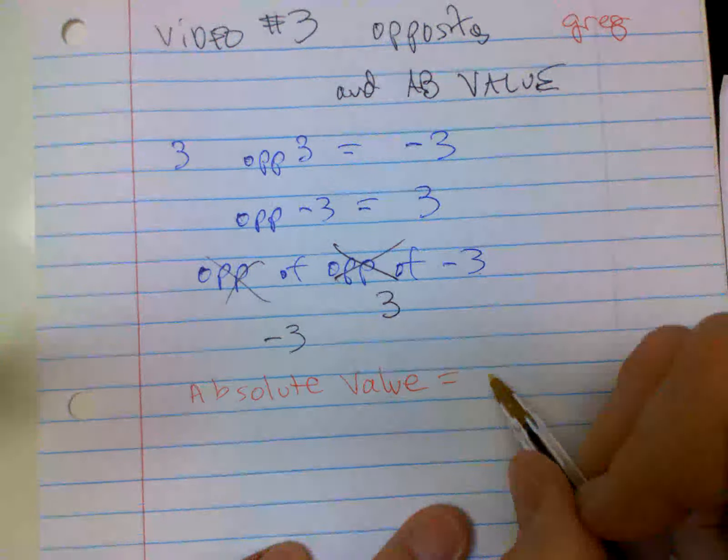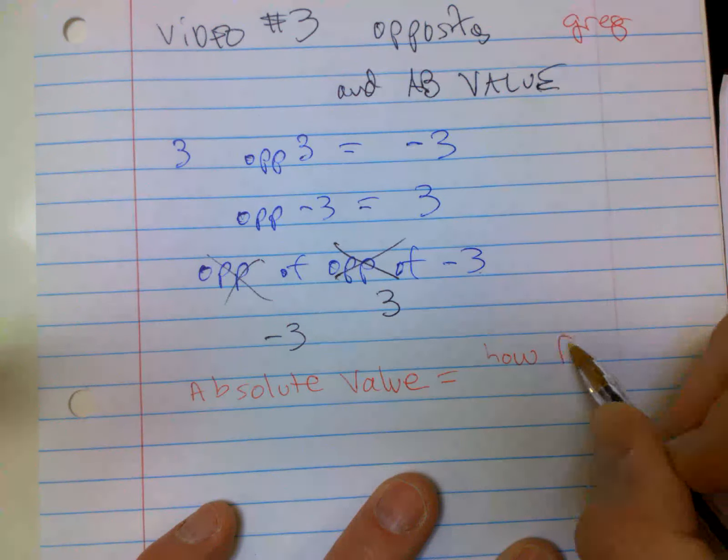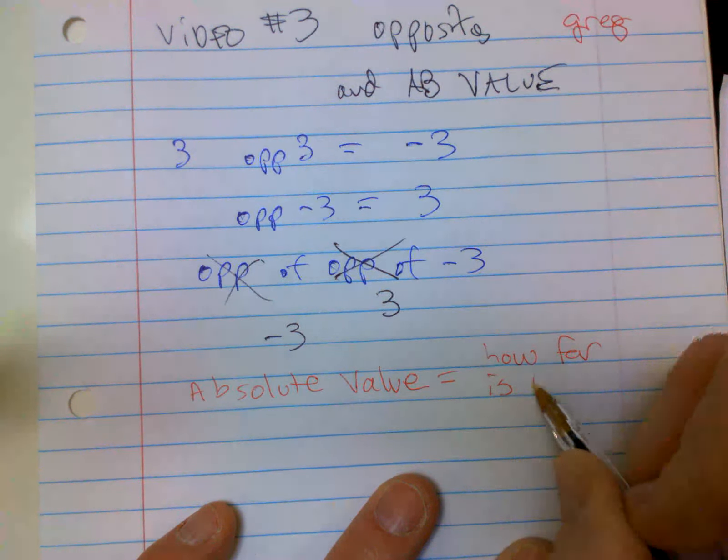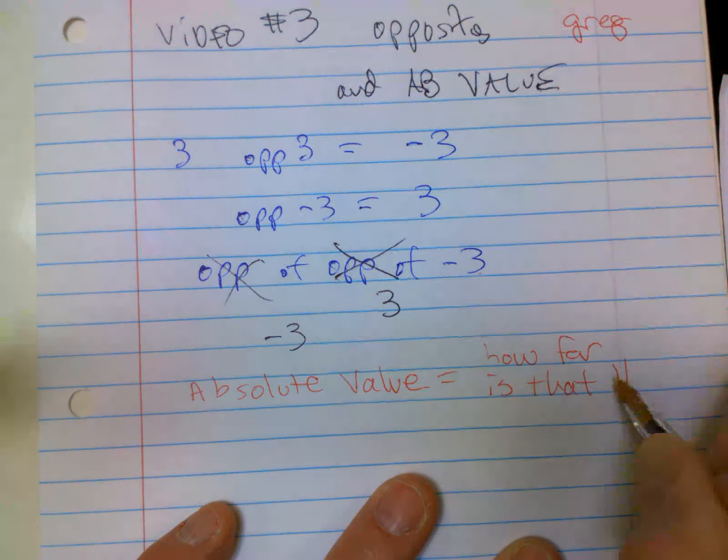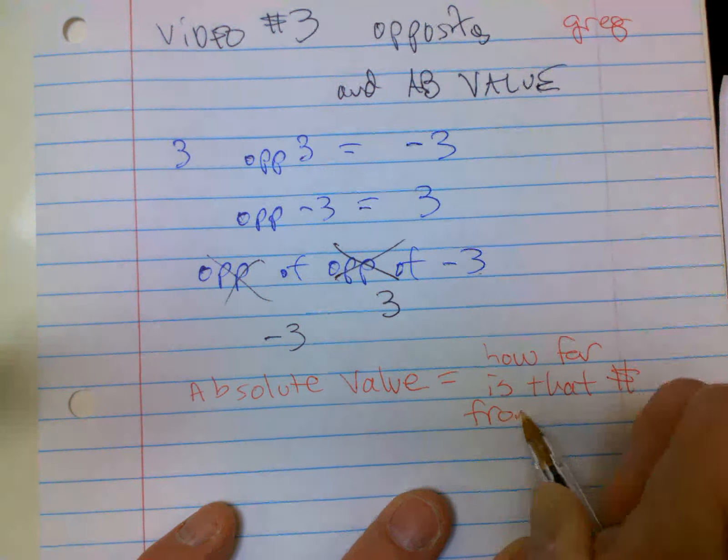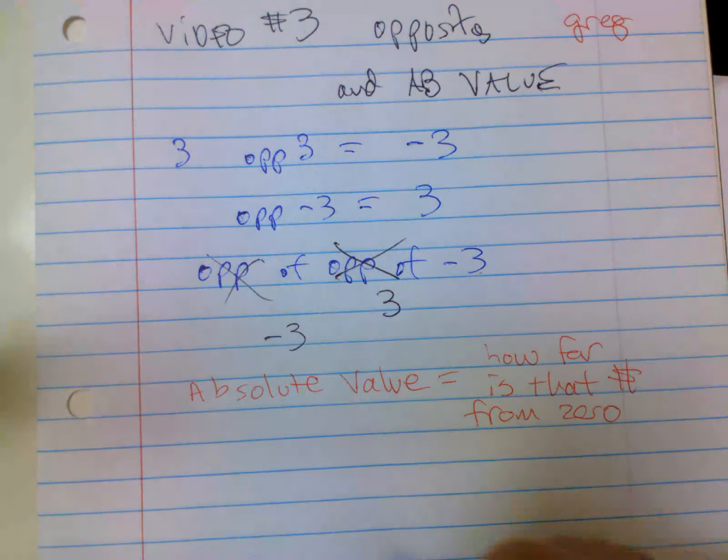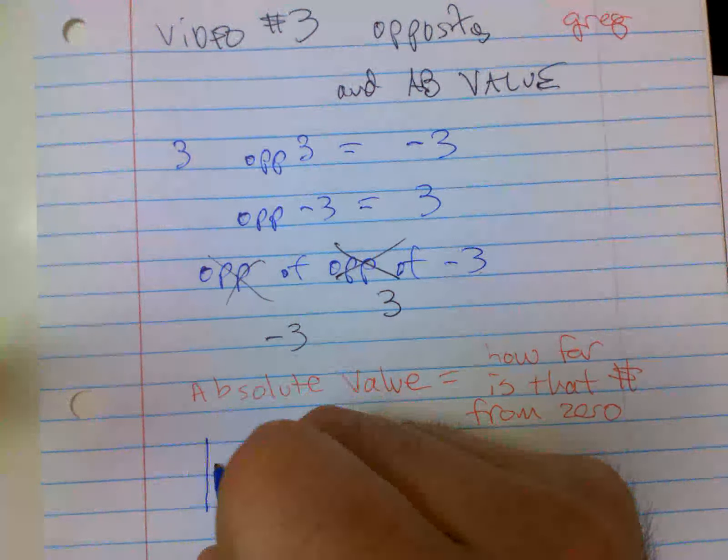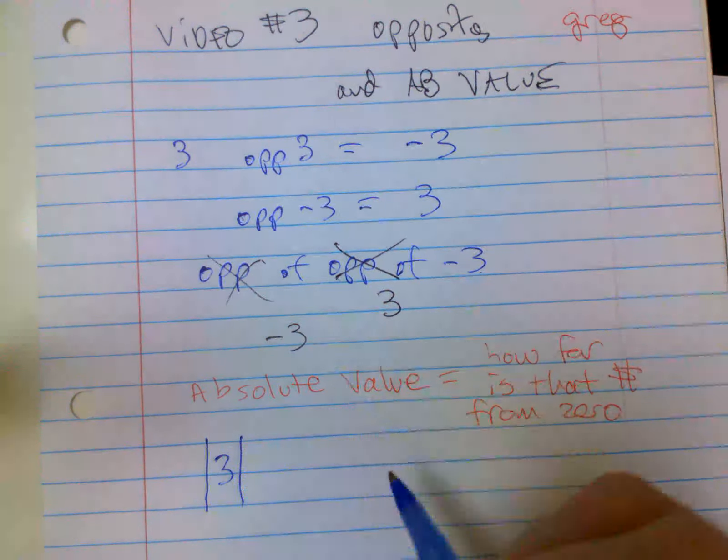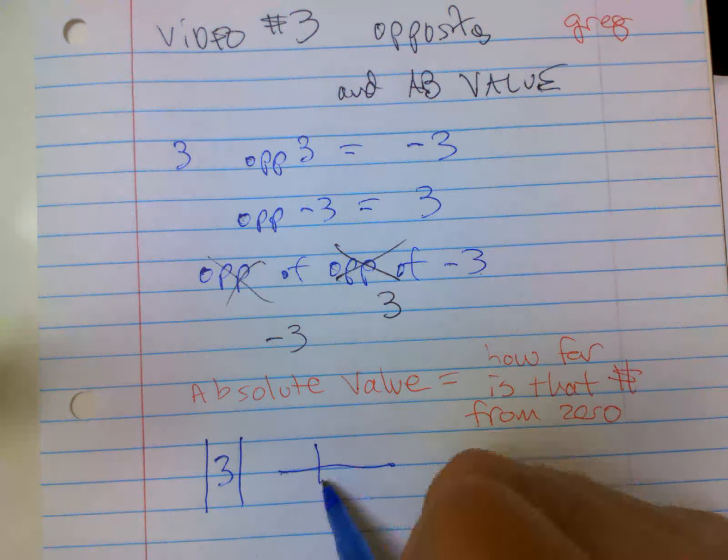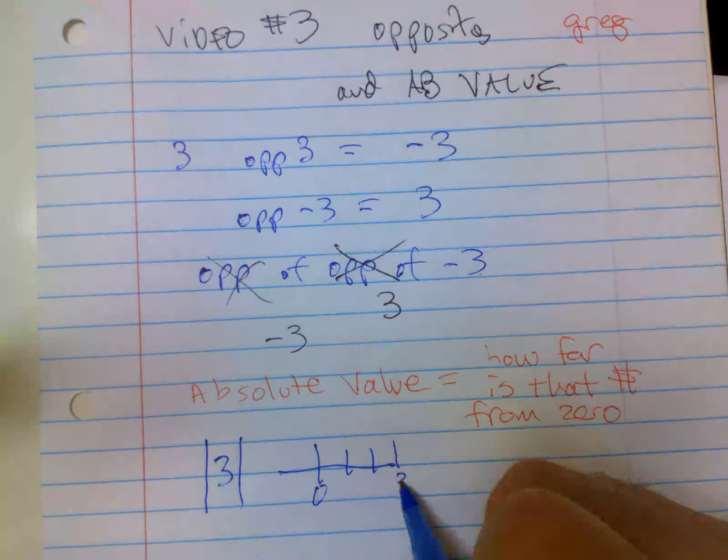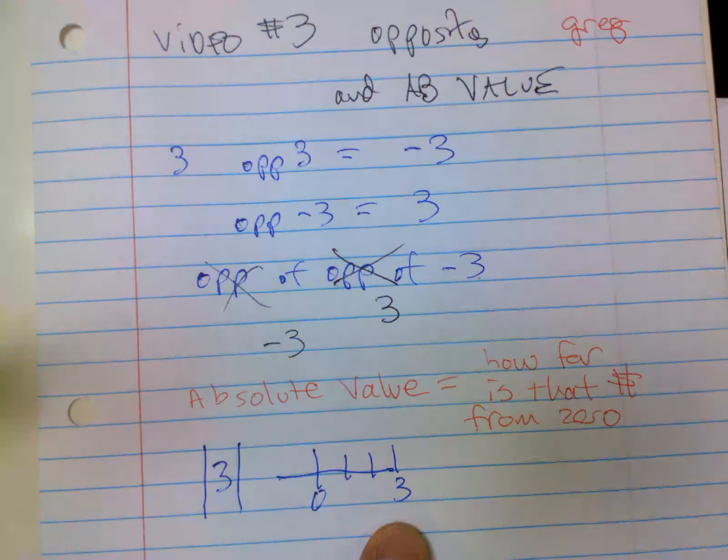First of all, all it means is how far is that number from zero. So if I say, and this is how it looks, they put these two bars like really big like this. Absolute value of three. Here's zero, one, two, three.